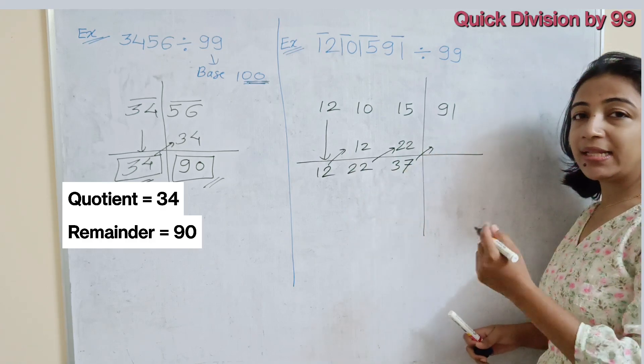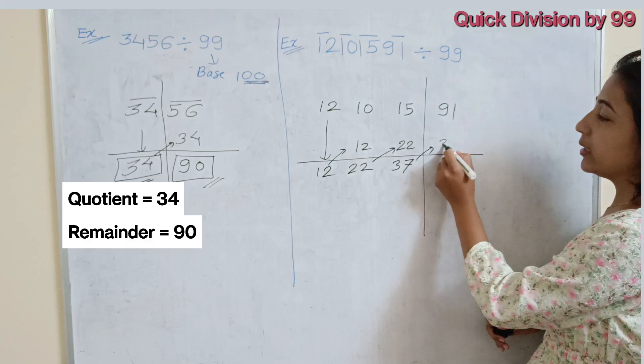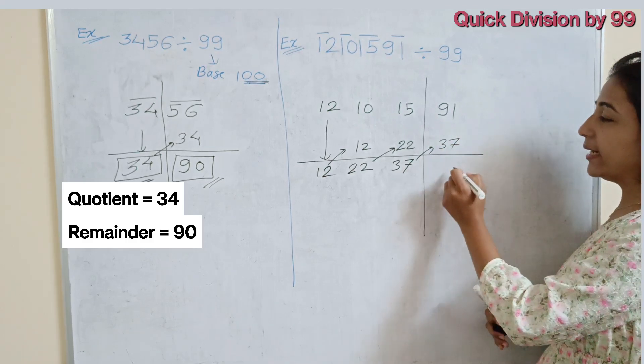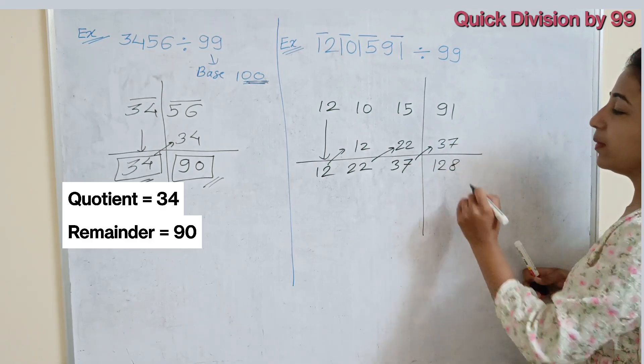So 22 plus of this 15 is 37. Add this 37 in the next number. So here 37 plus of 91, so it is 128.